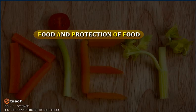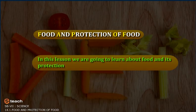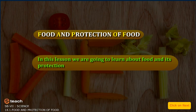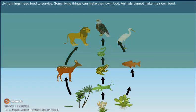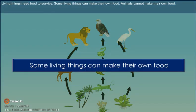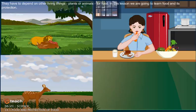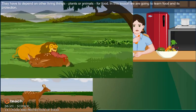Food and Protection of Food. In this lesson, we are going to learn about food and its protection. Living things need food to survive. Some living things can make their own food. Animals cannot make their own food, so they have to depend on other living things — plants or animals — for food.